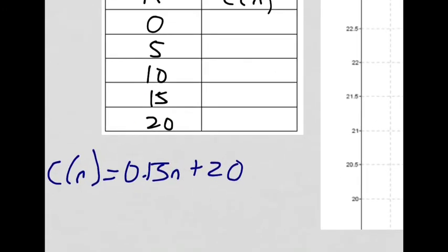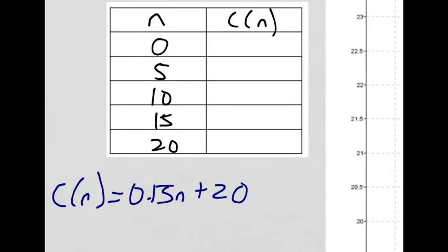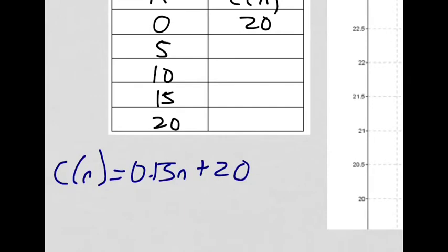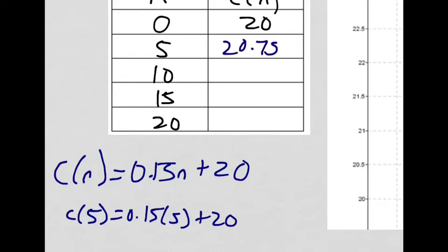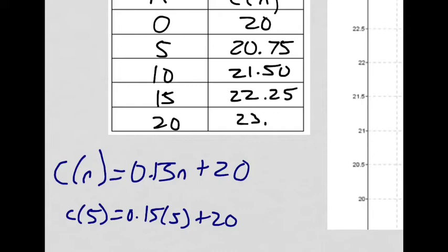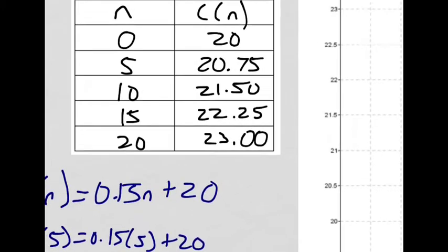So I evaluate C at each of these values. All I'm doing is putting in these values of N in for this N here in the equation. At zero, all I would pay is just the 20 bucks for the plan. If N was five, that would be 0.15 times five plus 20, which works out to 20.75. If I put in 10 for N, that will come out to 21.5. Put in 15 for N, that would be 22.25, and 20 for N would give me $23. You can check by putting in 0, 5, 10, 15, and 20 in for this N and evaluating those values.